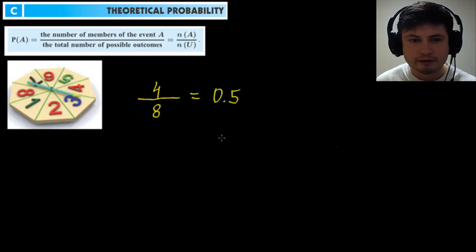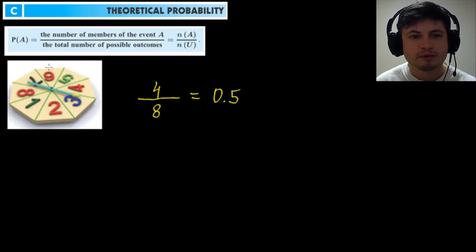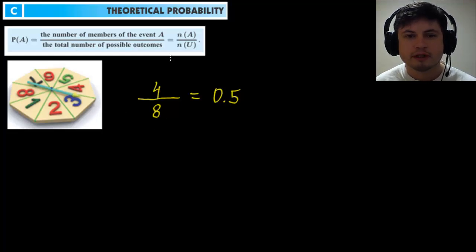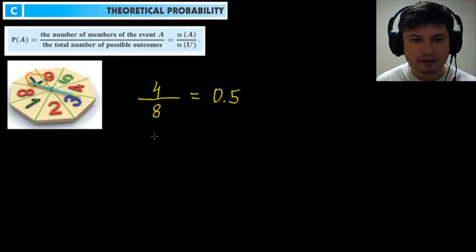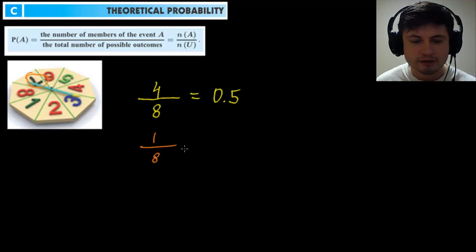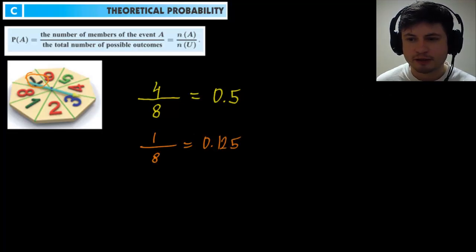Let's take a look at another example — what about just a specific number? What about the number seven? How many members of number seven are there? There's only one — it's right here. So the probability of getting a seven is one out of eight, which is essentially 0.125. That's the probability of getting this particular member.